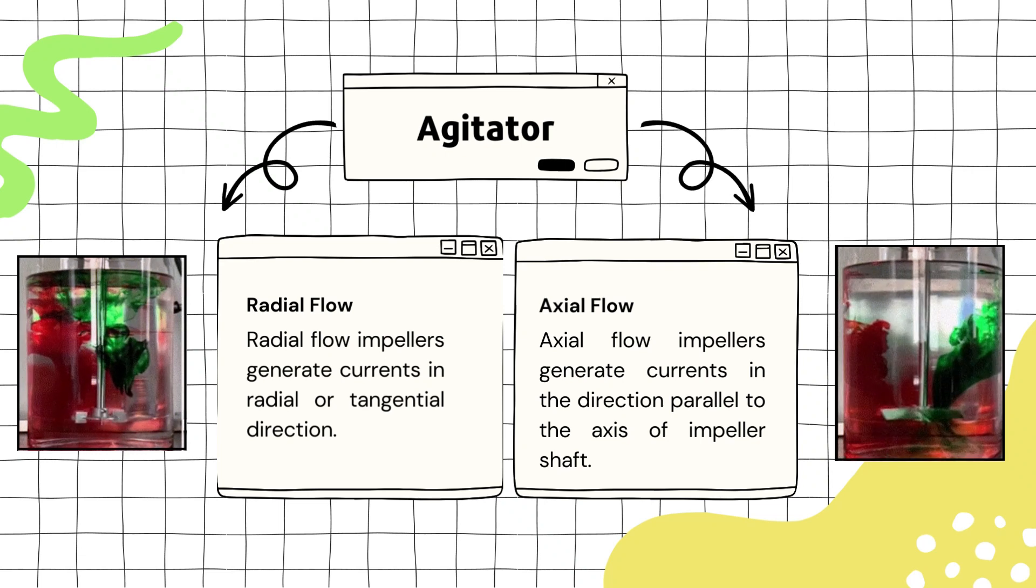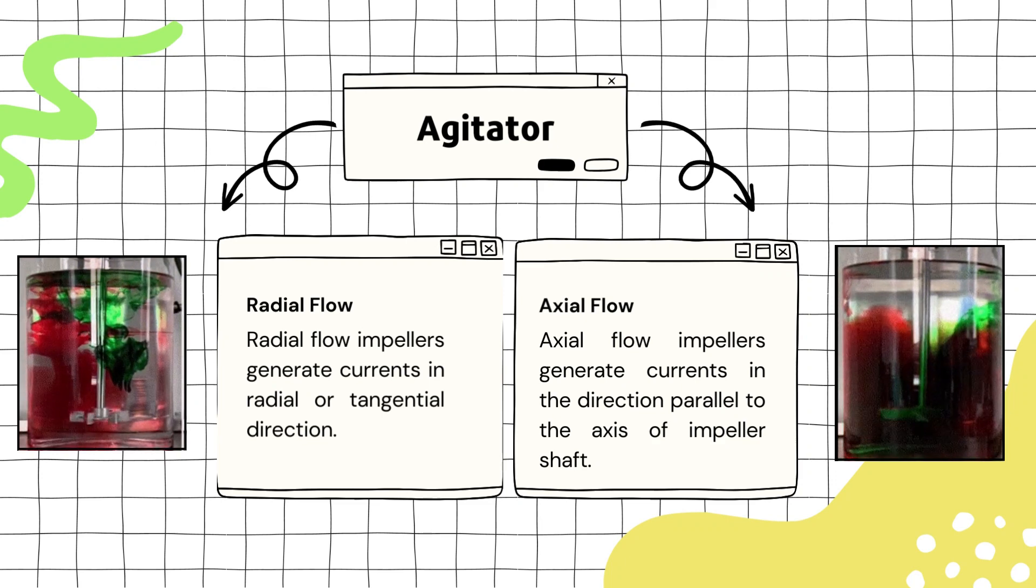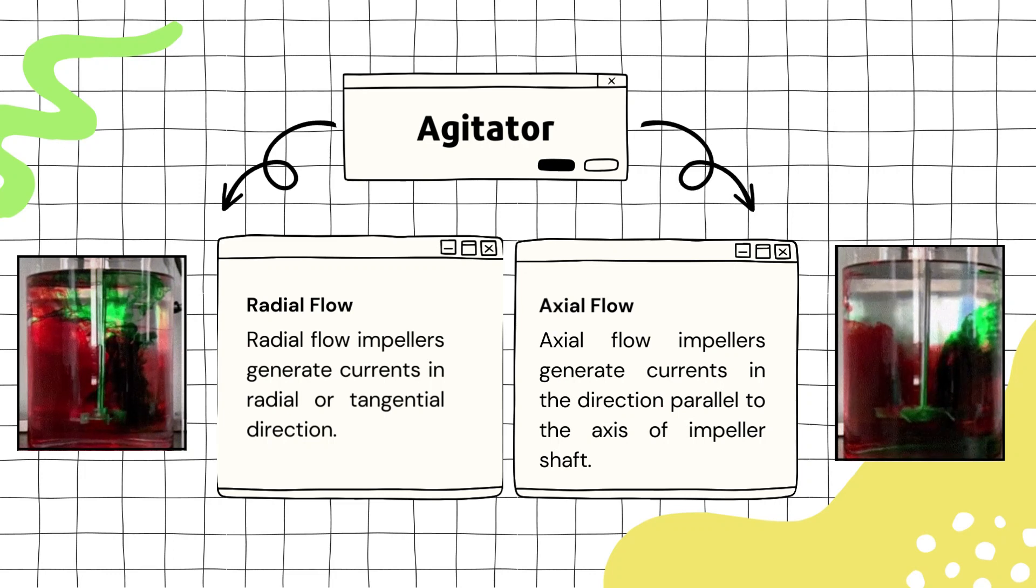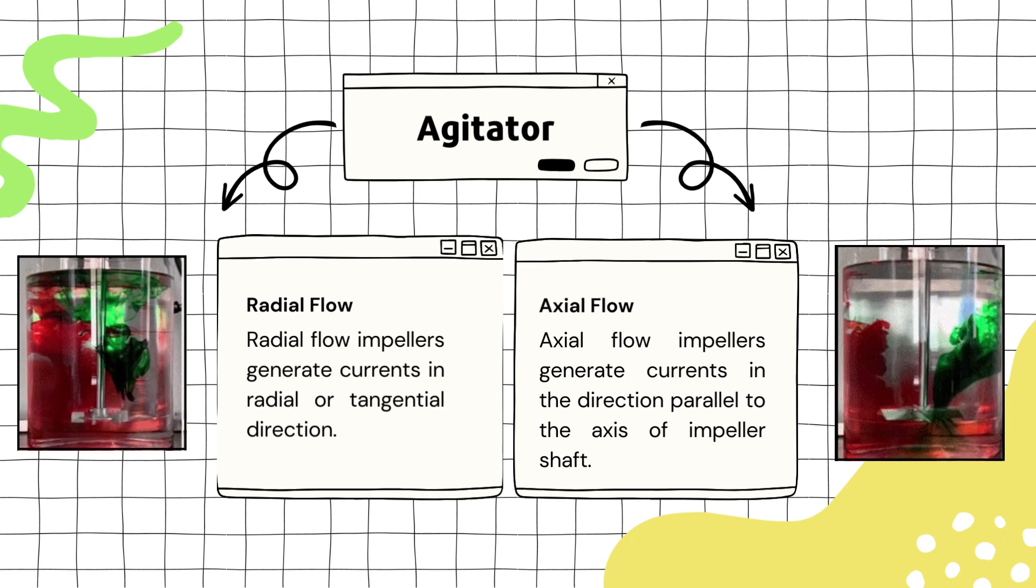In simple words, axial flow moves liquid in a straight line like a pipe, while radial flow moves in an outward direction like a spinning wheel. For example, imagine stirring a cup of tea with a spoon. If you stir by moving the spoon up and down, that's axial flow. If you swirl the tea around in a cup, that's like radial flow. You can also see the flow pattern on the video played on the screen.